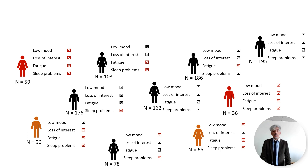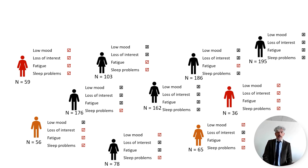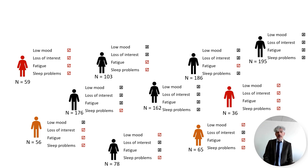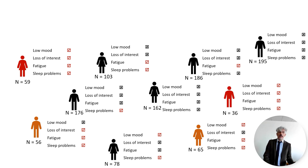Latent class analysis provides a method to decide how many categories I need to make sense of the variability I observe in people's behavior. Latent class analysis also allows us to categorize individuals into categories according to their observed behavior — but rather than arbitrary rules, latent class analysis uses probability rules, therefore providing a more robust, systematic, and transparent method to categorize individuals into groups based on the behavior I observe.